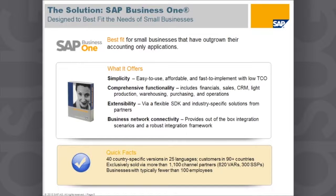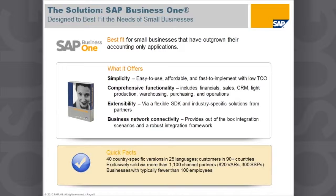Businesses with separate accounting, CRM, and warehousing systems are looking to bring all of those together. SAP Business One offers simplicity first and foremost — it's been designed to be as easy to use as possible and fast to implement, especially with the SAP Business One Starter Package. It gives you a lower total cost of ownership, rapid return on your investment, and comprehensive functionality including financials, inventory management, sales orders, production orders, and CRM.